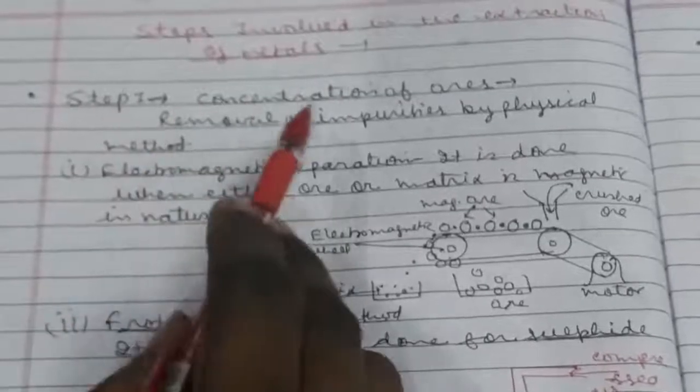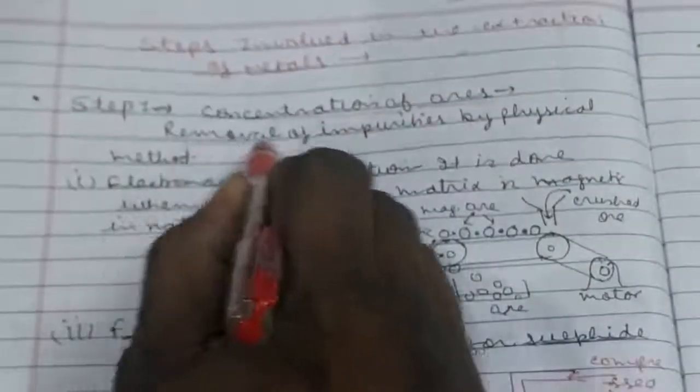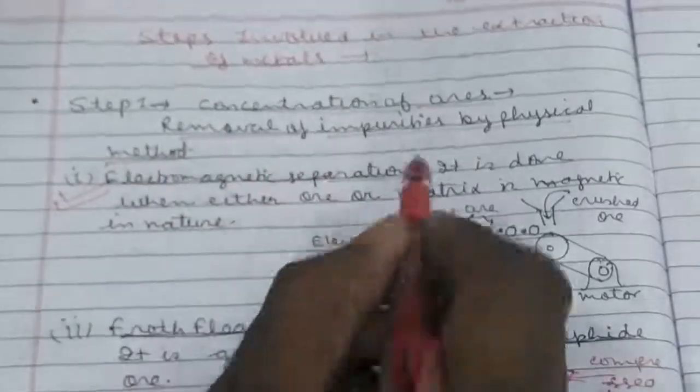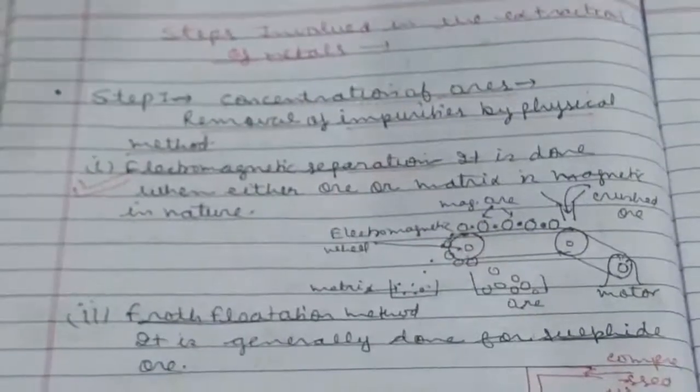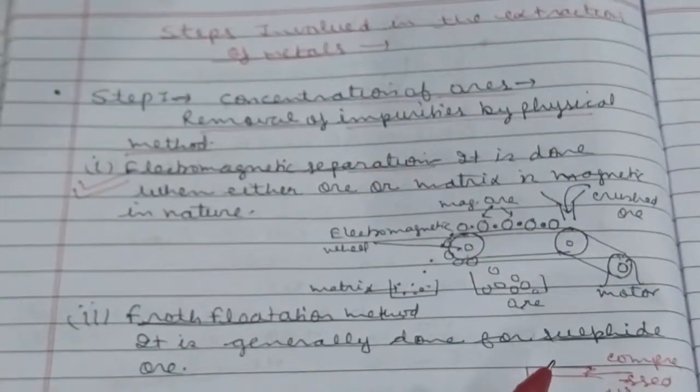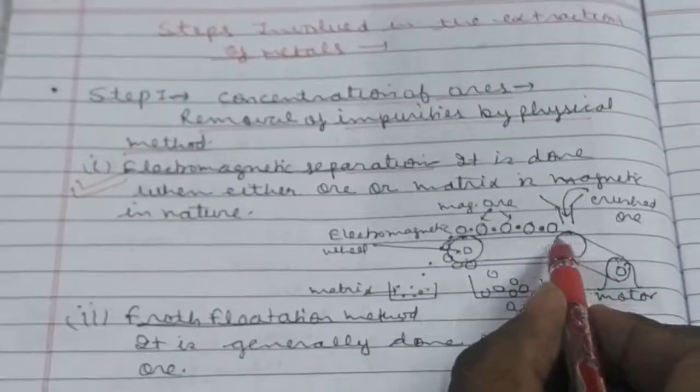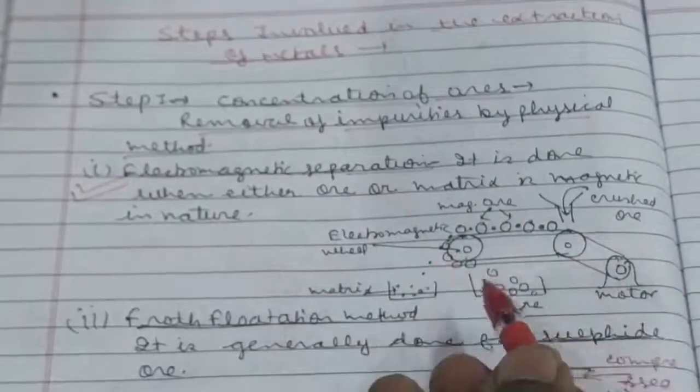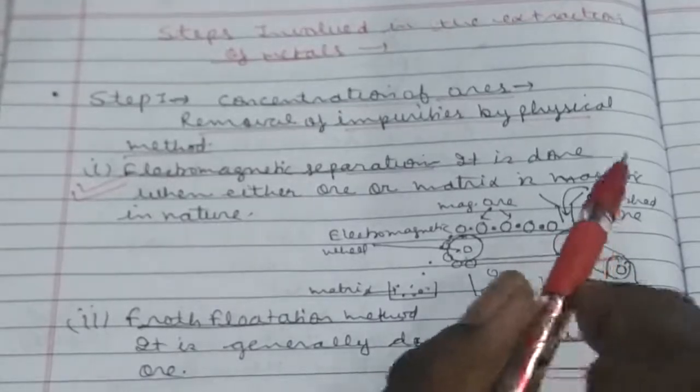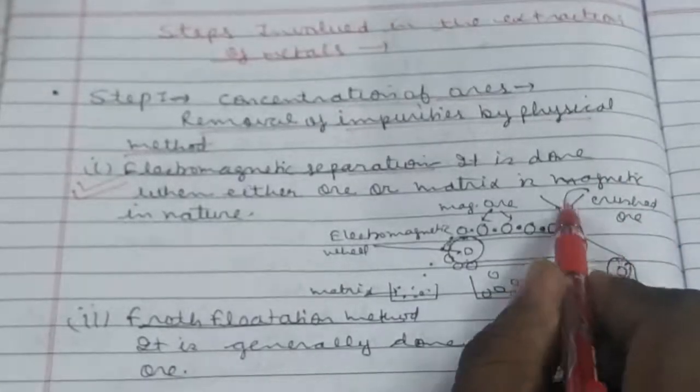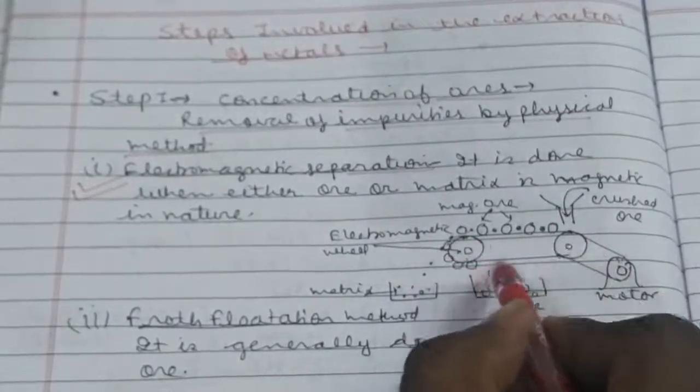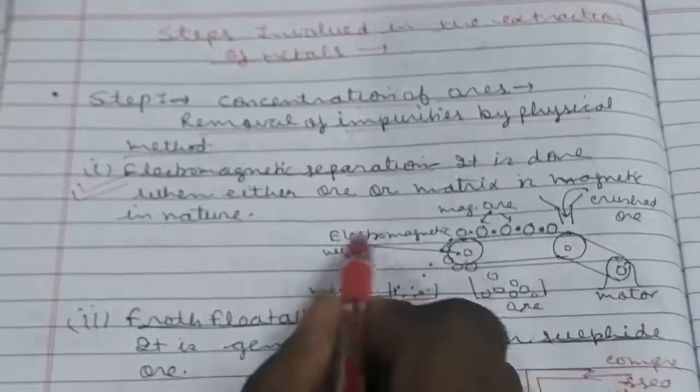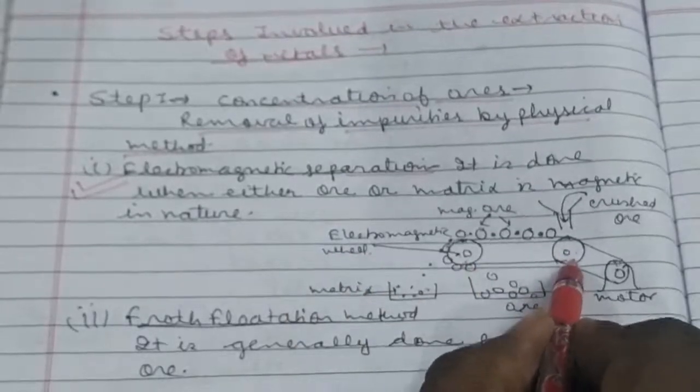Now we will explain how these steps can be carried out. The first step is concentration of ore, removal of impurities by physical method. The first method is electromagnetic separation. This process is done when either ore or matrix is magnetic in nature. In this process, if there is such type of ore which is either magnetic or matrix is magnetic, first you will crush the ore and then drop that crushed ore over this belt. This leather belt revolves over these two wheels.